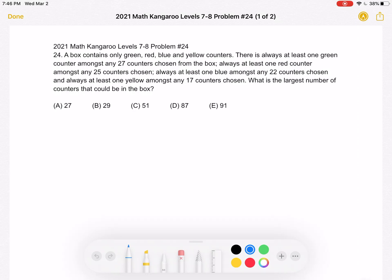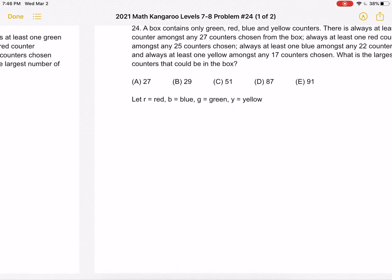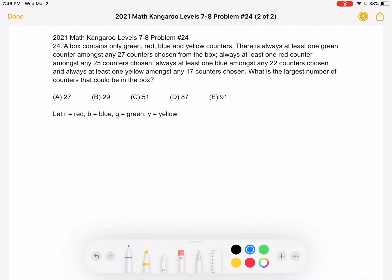This is the problem as it originally appeared on the test, and here is where we'll be doing the solution. Let's start by letting R represent red, B represent blue, G represent green, and Y represent yellow. We're basically going to interpret the different statements given in the problem and write them as inequalities.